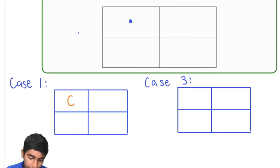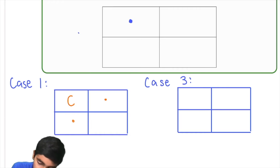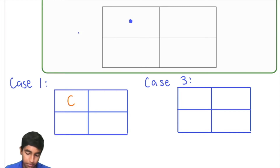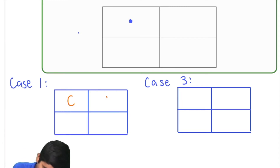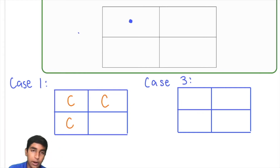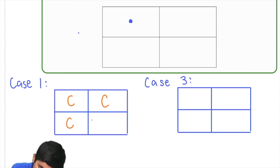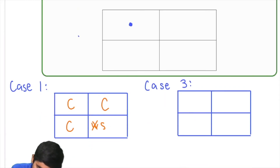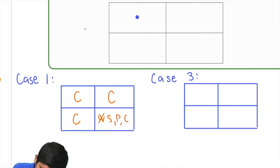We'll look at cases for the top-right and bottom-left squares. Case one: both of those squares are also corn. How many choices do we have for the fourth square? It cannot be wheat (corn and wheat can't be together), but it can be soybeans, potatoes, or corn. So we have three choices in this case.